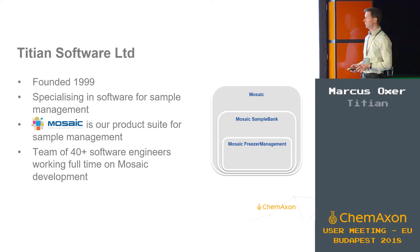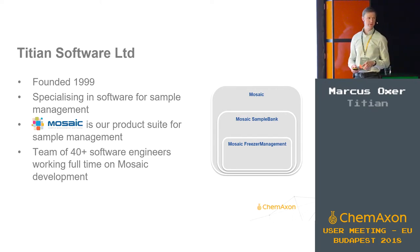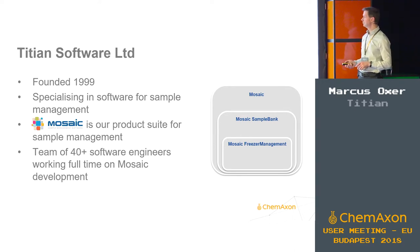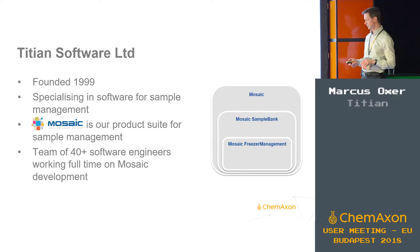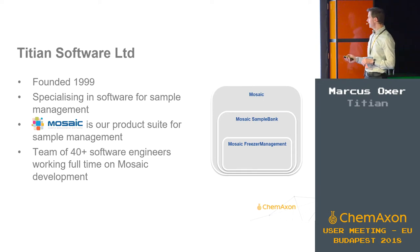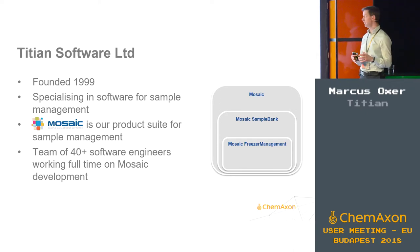A little bit of background about Titian Software — we are nearly ready for our 20th birthday, founded in 1999. We are all about software for sample management. Where the registration we just looked at covers compound properties and structures, we deal with the physical samples and their entire life cycle. Mosaic is our product for sample management, and we have over 40 software engineers just working on development. Mosaic is available in three editions: a shrink-wrapped Freezer Management version that handles inventory, tubes, plates, transfers, and integration with automated stores.